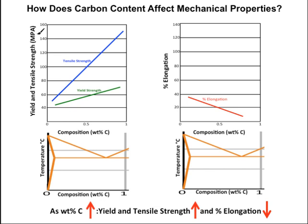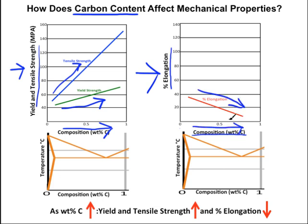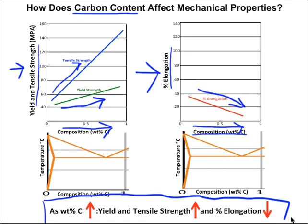How does carbon content affect mechanical properties? As weight percent carbon increases, tensile strength and yield strength both increase. On the ductility graph, as weight percent carbon increases, percent elongation — ductility — decreases. To summarize: as weight percent carbon goes up, yield and tensile strength both go up, and percent elongation goes down.